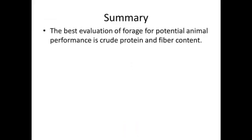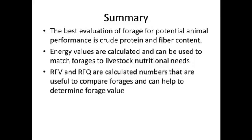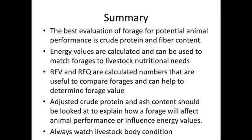In summary, the best evaluation of forage for potential animal performance is crude protein and fiber content. We look at energy values — those are calculated but used to match forages to livestock nutritional needs. Relative feed value and relative feed quality are calculated numbers useful to compare forages and determine forage value, especially in an auction situation. Adjusted crude protein and ash content can be used to explain how a forage will affect animal performance or influence energy values. And finally, remember to always watch your livestock body condition. That concludes this presentation of Interpreting Forage Test Results.